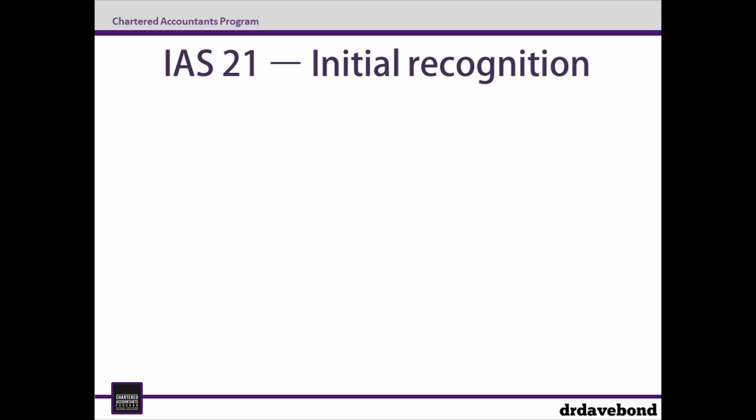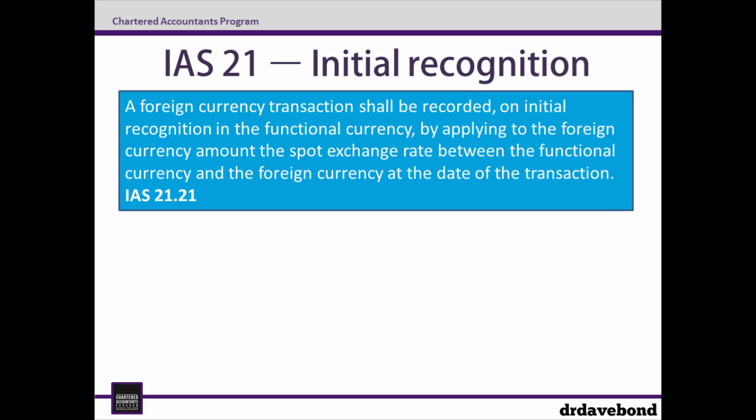To account for the initial recognition of a foreign currency transaction, IAS 21 paragraph 21 is applied. This states that a foreign currency transaction shall be recorded on initial recognition in the functional currency by applying to the foreign currency amount the spot exchange rate between the functional currency and the foreign currency at the date of the transaction. There's a bit to take in there, but we'll also have a look at a number of technical definitions which are worth pointing out.